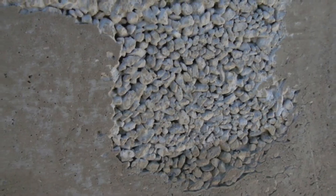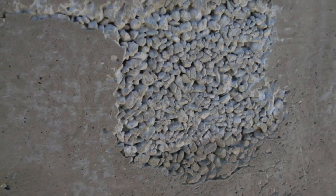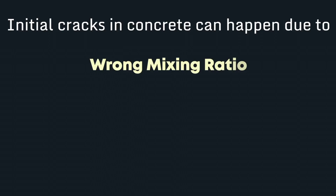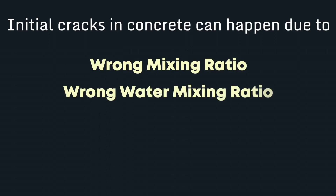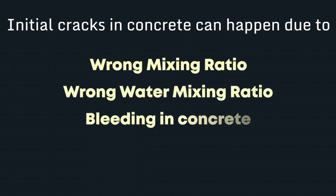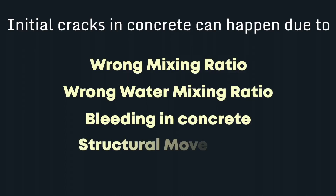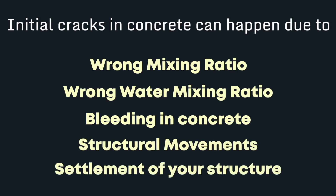First and foremost, your concrete should not have any voids called honeycombs, which will easily allow water penetration. Second, there should not be any cracks — initial cracks can happen due to wrong mixing ratio, wrong water-cement ratio, bleeding, or structural movement and settlement. These issues need to be addressed before waterproofing.